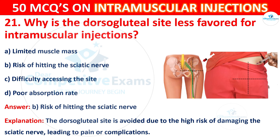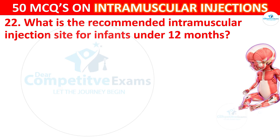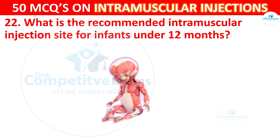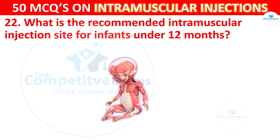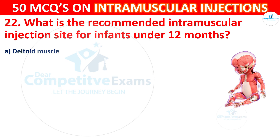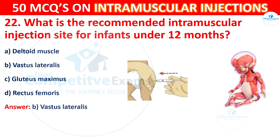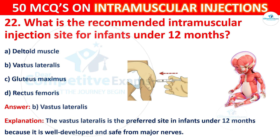Question 22: What is the recommended intramuscular injection site for infants under 12 months? The correct answer is B, vastus lateralis. The vastus lateralis is the preferred site in infants under 12 months because it is well developed and safe from major nerves.